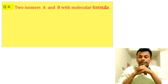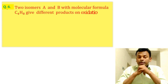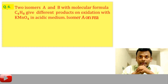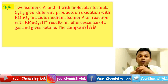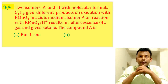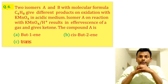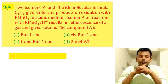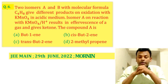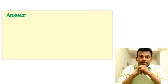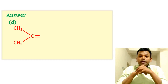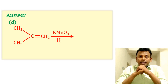Question 6: Two isomers A and B with molecular formula C₄H₈ give different products on oxidation with KMnO₄ in acidic medium. Isomer A reacts with KMnO₄/H⁺ to result in evolution of gas and gives a ketone. This question was set in JEE Main 29th June 2022 evening shift. Answer: option D is correct. 2-methylpropene oxidized with KMnO₄ in acidic medium gives a ketone and carbon dioxide. So option D is the correct answer.